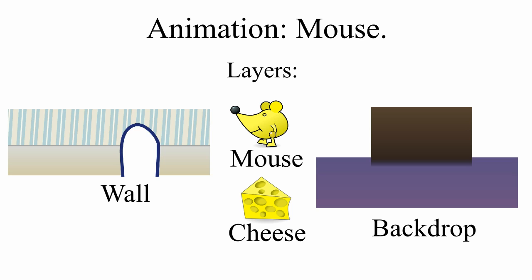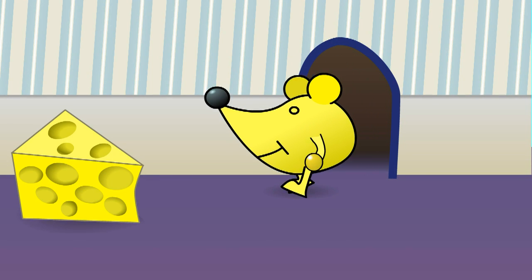In this animation, the mouse has been edited to start behind the wall, and his hands have been edited to start on either side of the cheese.